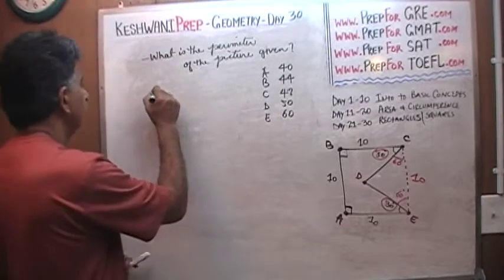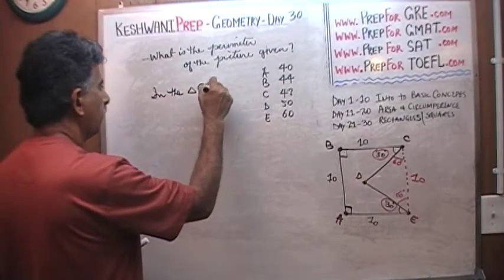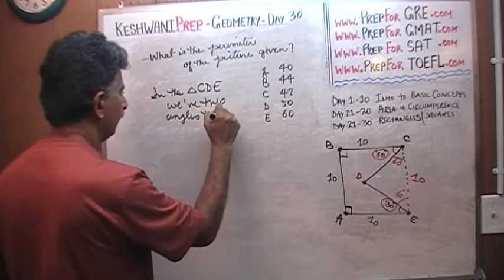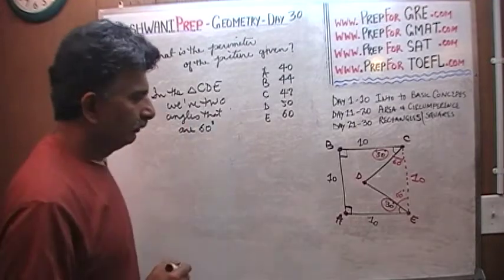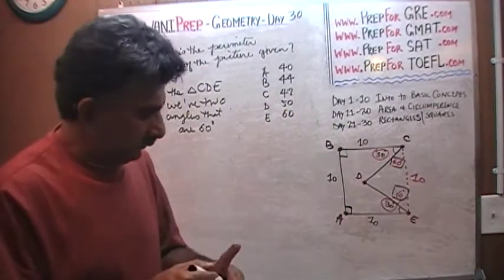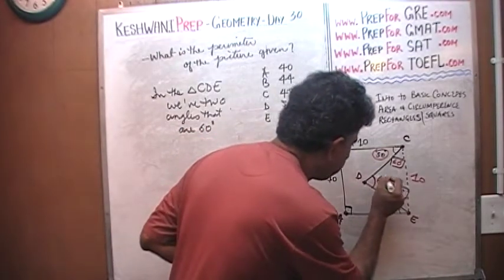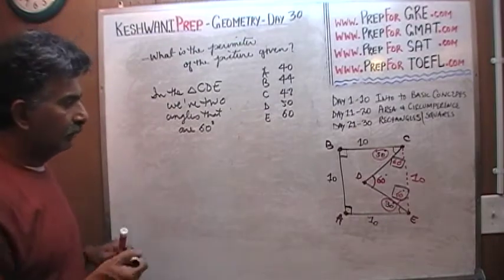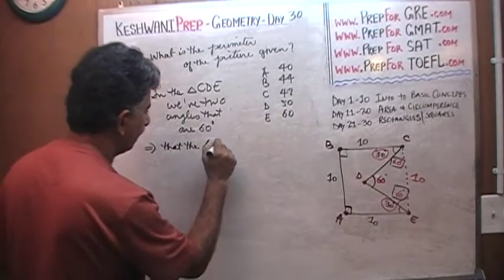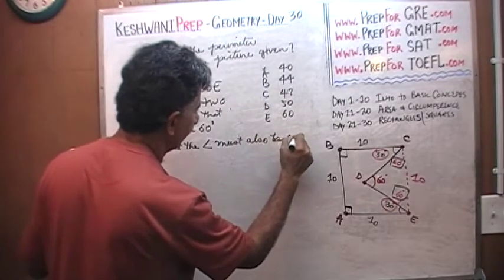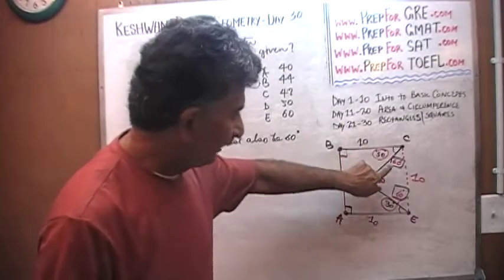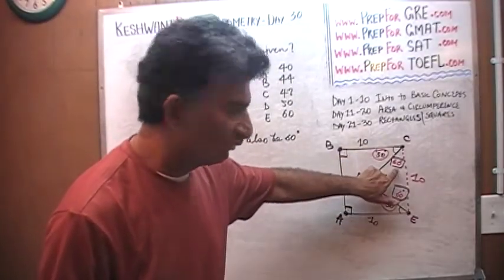So now what do you notice in the triangle CDE? In the triangle CDE we have two angles that are 60 degrees. But if two of the angles are 60 degrees, this one and that one, it stands to reason that the third one must also be 60 degrees. Angle D must also be 60 degrees. This implies that the third angle must also be 60 degrees. Follow the logic. We're told that this angle is 30, we're told that this side is 10 and this side is 10. If this forms 90 degrees it must also form 90 degrees here.